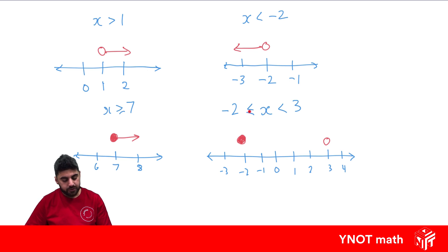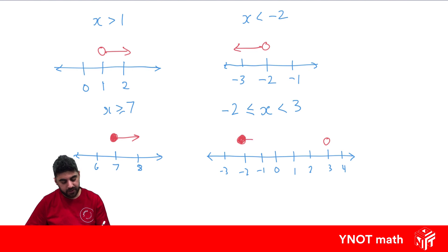At three there's no equal to sign, so we leave that one open. This is saying: where are all the values greater than or equal to minus two? They're on this side. Where are all the values where x is less than three? They're on this side. When we read it one way it's a less than or equal to sign, but reading it the other way we can say minus two is less than or equal to x, or x is greater than or equal to minus two. All these values are in the middle, so we just join them together.